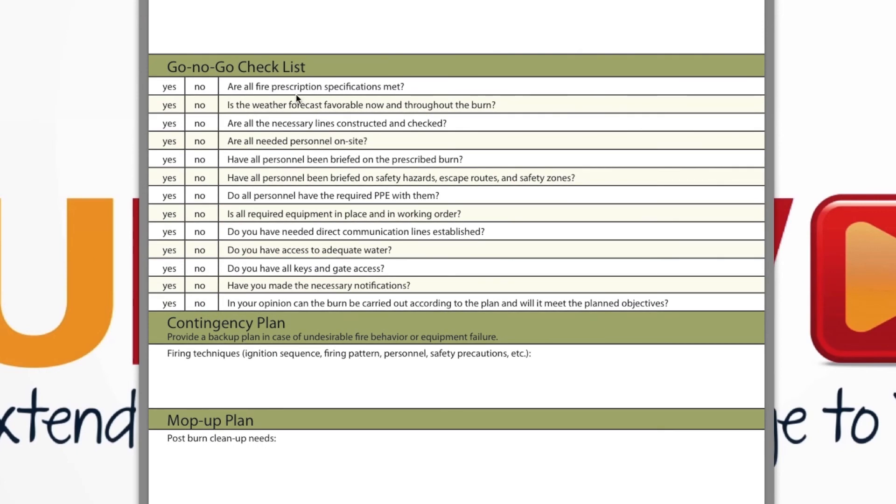On the day of the burn, there is a go-no-go checklist and you need to follow that — go right down through that list. It's going to ask you: is the weather appropriate? If you check no, you're done for the day. If you have contacted everybody around there, you mark that down. If you've contacted EMS, you mark that down. It goes all the way through all of the critical aspects of that burn plan. And if there is a check in the no section, you need to step back and evaluate if today is the best day to burn.